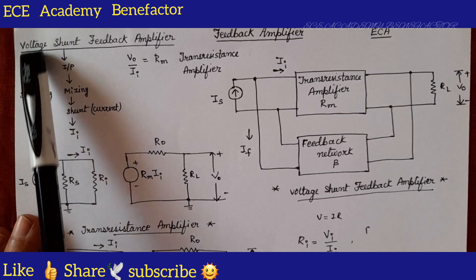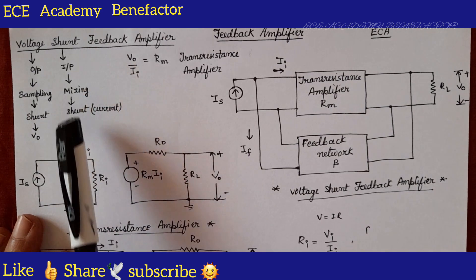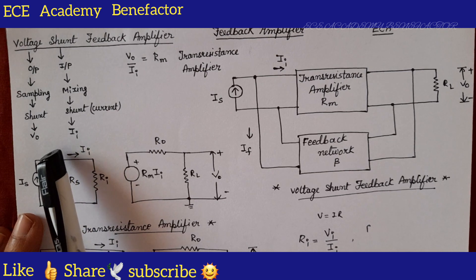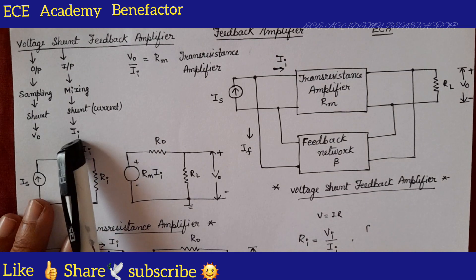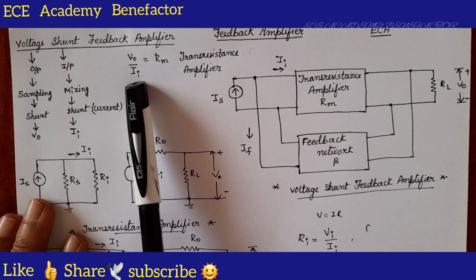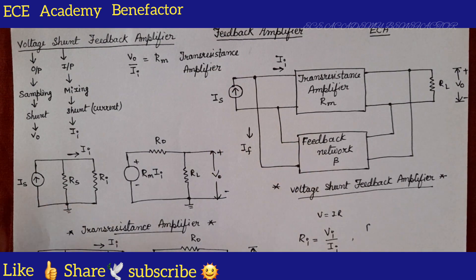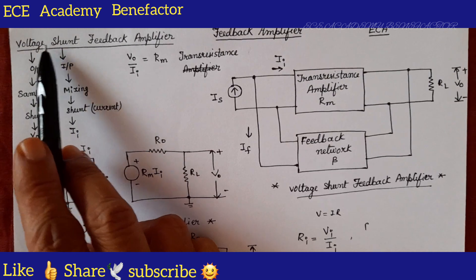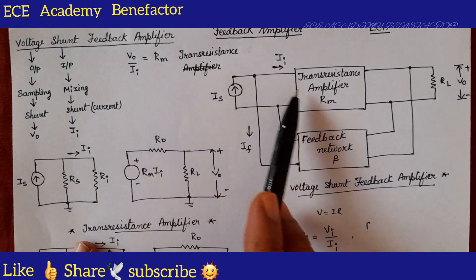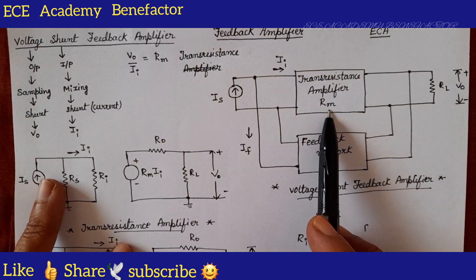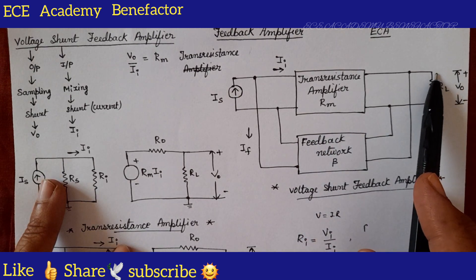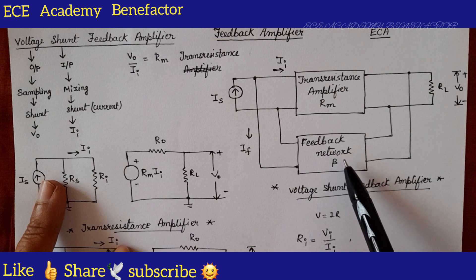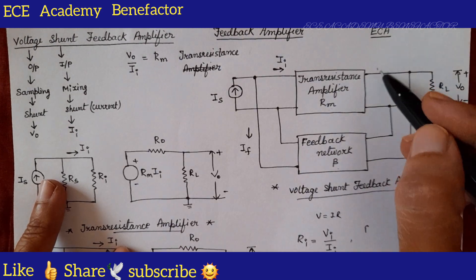At the output side we get the parameter voltage V-naught. At the input side, due to shunt mixing, we need to place a current source. If we find the ratio of output by input — output is V-naught, input is I-i — the ratio of V-naught by I-i is known as R-m, trans-resistance. Based on this, the voltage shunt configuration requires a trans-resistance amplifier. We have taken a trans-resistance amplifier of gain R-m, with a feedback network of feedback ratio beta. At the output side we do voltage sampling.